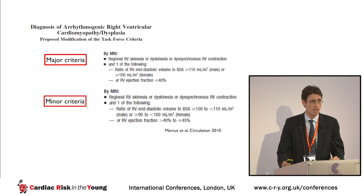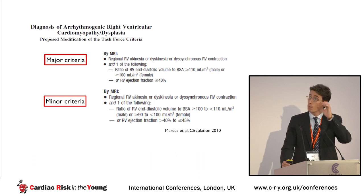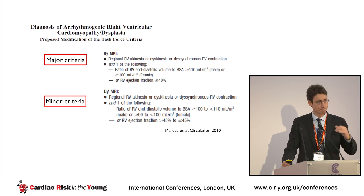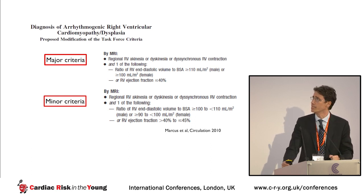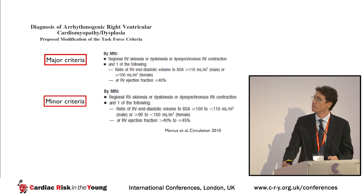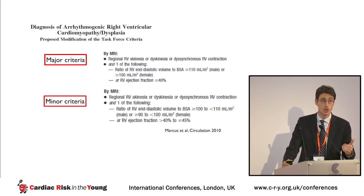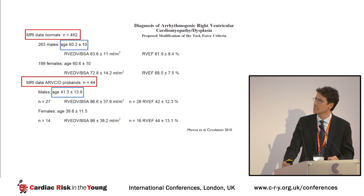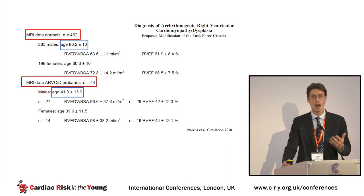Both major and minor criteria identify a combination of two aspects: regional wall motion abnormality — akinesia or dyskinesia of the right ventricle — plus right ventricular dilatation and/or right ventricular systolic dysfunction. The thresholds are slightly higher in terms of volume for the major criteria and slightly lower in terms of systolic function and right ventricular ejection fraction.